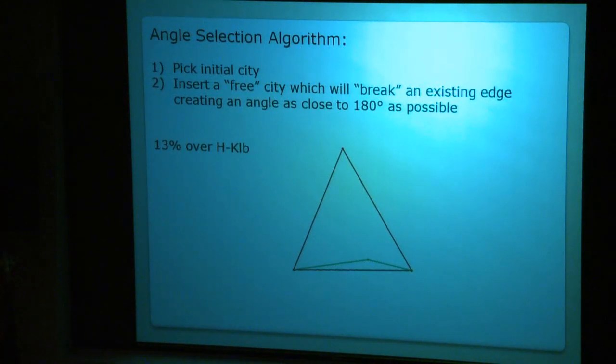Then we have angle selection, that's again a little bit of geometry. Once we try to insert a city, we split an edge, and when we split an edge resulting in an angle that's very close to 180 degrees, we have a pretty short connection, two short edges. And once the angle is about 60 degrees, then our new edges are very long.